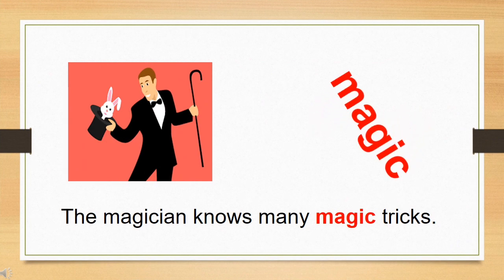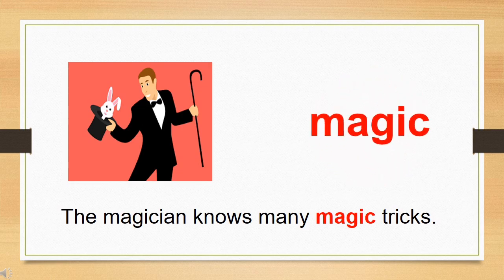The word is magic. The meaning of magic is the art of doing tricks that seem impossible in order to entertain people. Now let's use magic in the sentence: The magician knows many magic tricks.